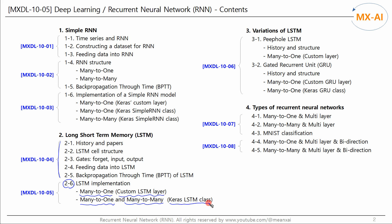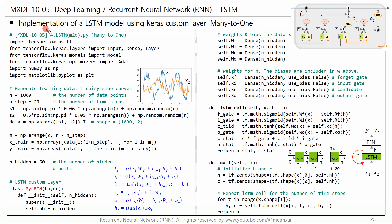Keras' LSTM class makes it easy to implement LSTM models. Let's create an LSTM cell with Keras' custom layer and implement a many-to-one LSTM model. Generate a time series dataset — this is the same as what we used in the simple RNN model. Let's generate two sine curves with different frequencies mixed with Gaussian noise. Each curve consists of 1,000 data points, and this figure shows only the last 100 data points out of 1,000.